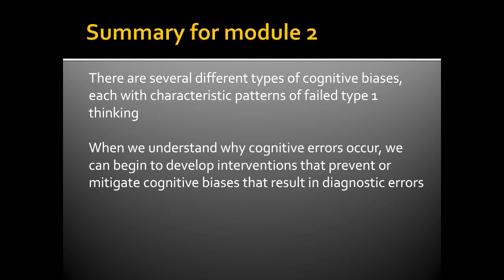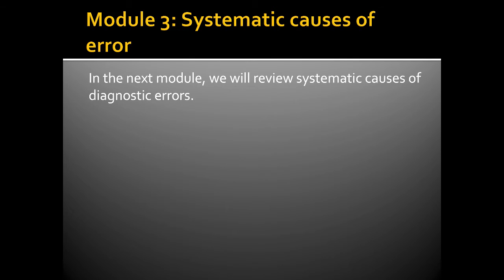To summarize, there are several different types of cognitive biases, each with characteristic patterns of failed Type 1 thinking. When we understand why cognitive errors occur, we can begin to develop interventions that prevent or mitigate cognitive biases that result in diagnostic errors. In the next module, we will review systematic causes of diagnostic errors.